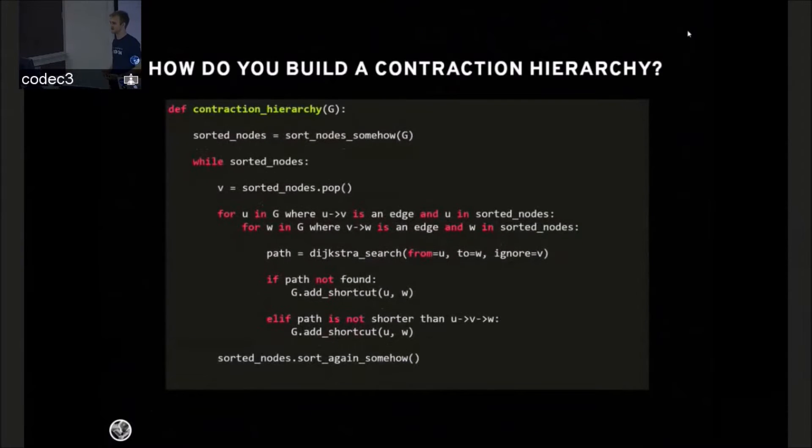How do you build a contraction hierarchy? There's some rough pseudocode here, but the idea is that you sort every node in the graph any way you please. You take the smallest node, and you look at all of his neighbors. And you try to find a path from any pair of neighbors that doesn't go through the node that you pulled out of the sort. If you can find one, you're fine. If you can't, you have to add an edge between the neighbors to represent the two edges and the node you pulled out. And then you continue pulling nodes out of the sort, but only inspecting the neighbors that are still in the sort. So you slowly reduce the amount of the graph that you're inspecting.